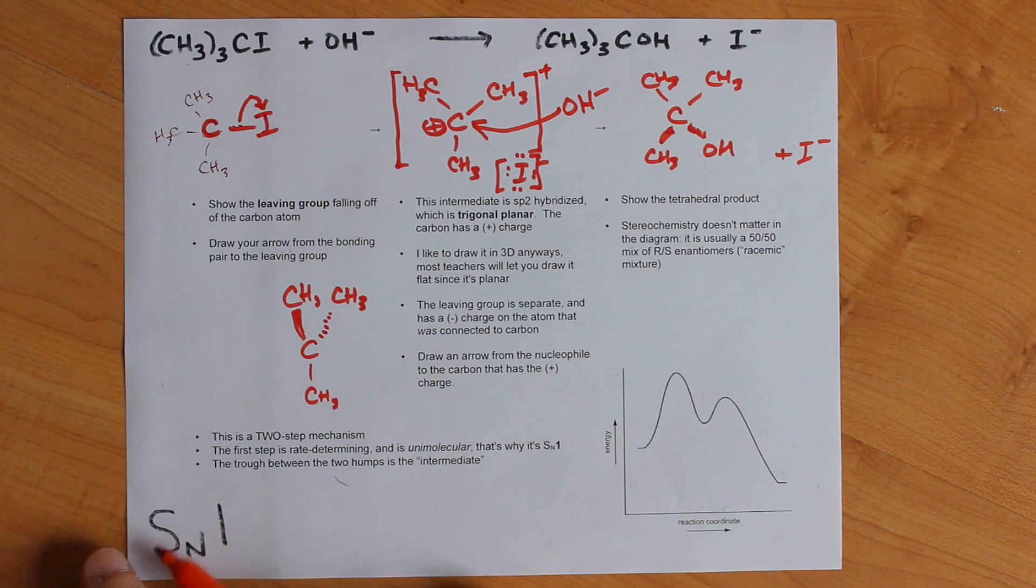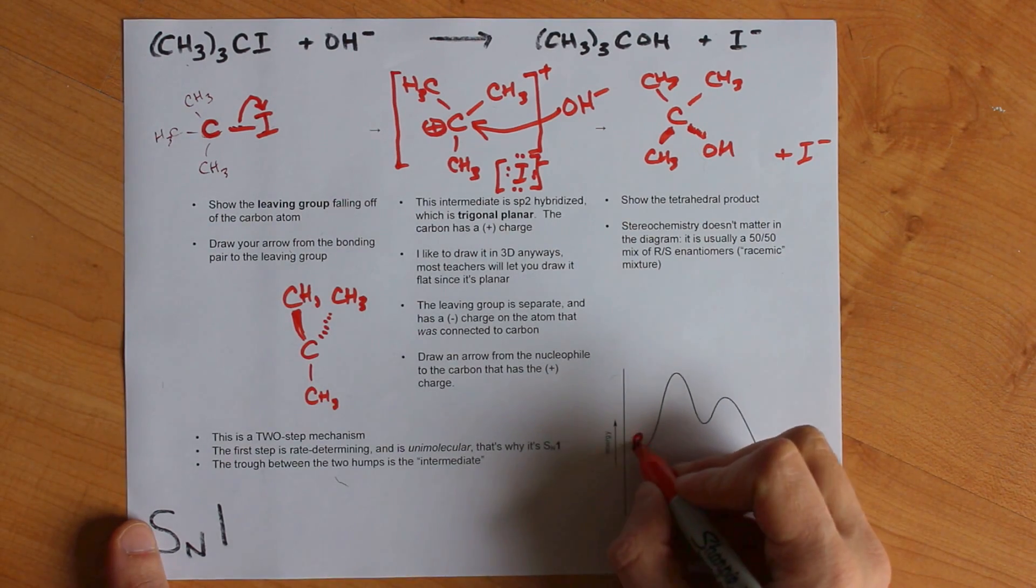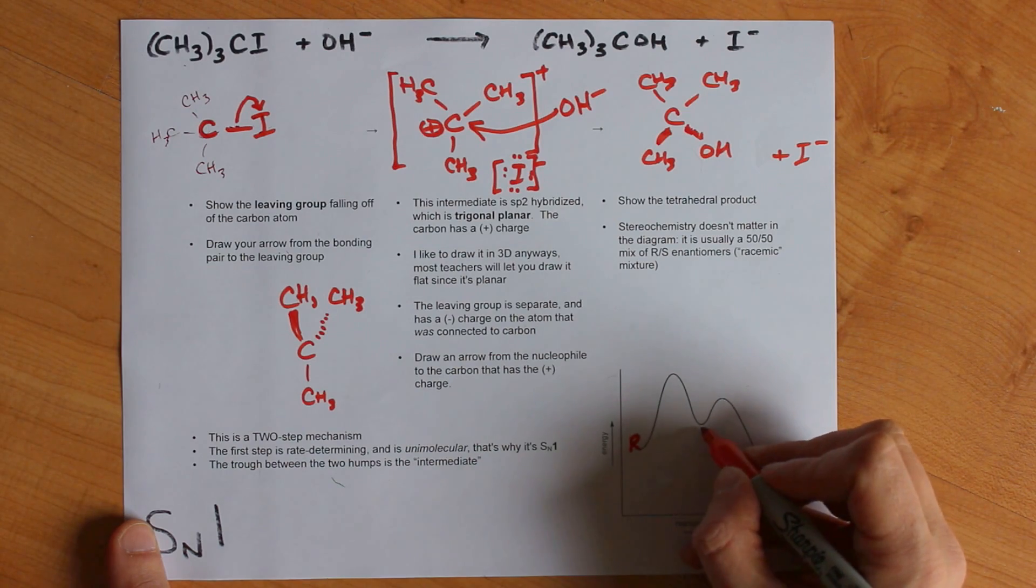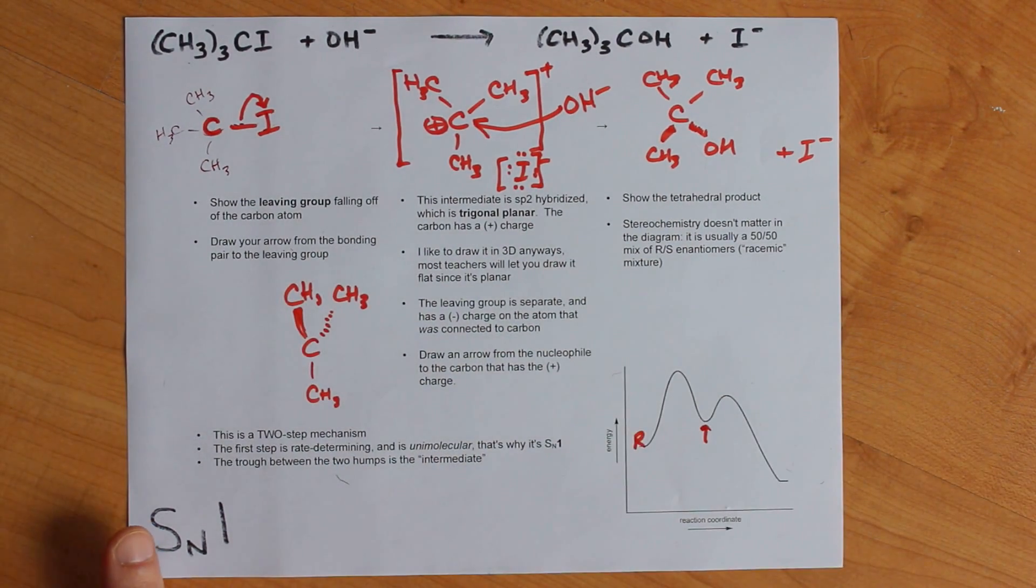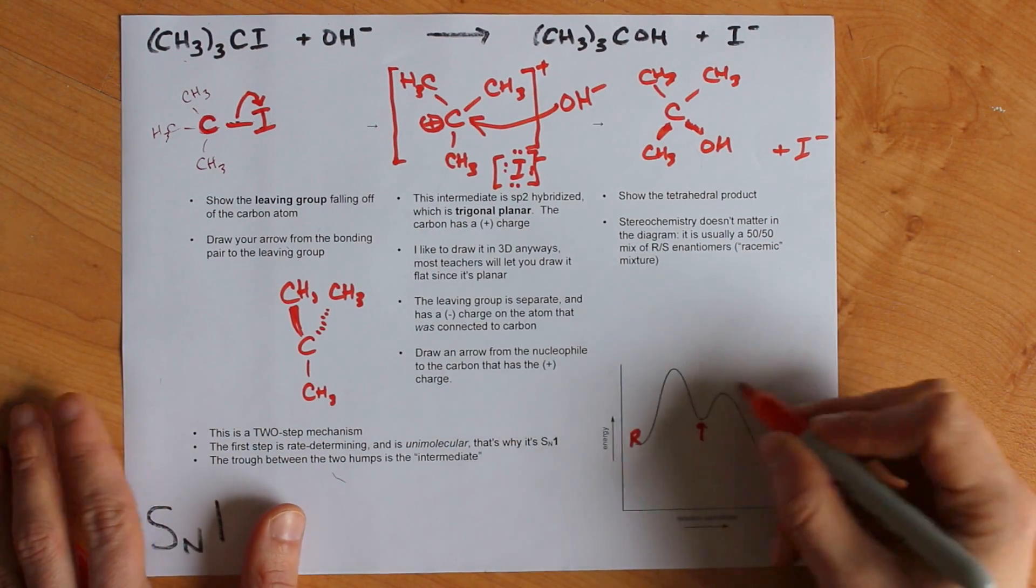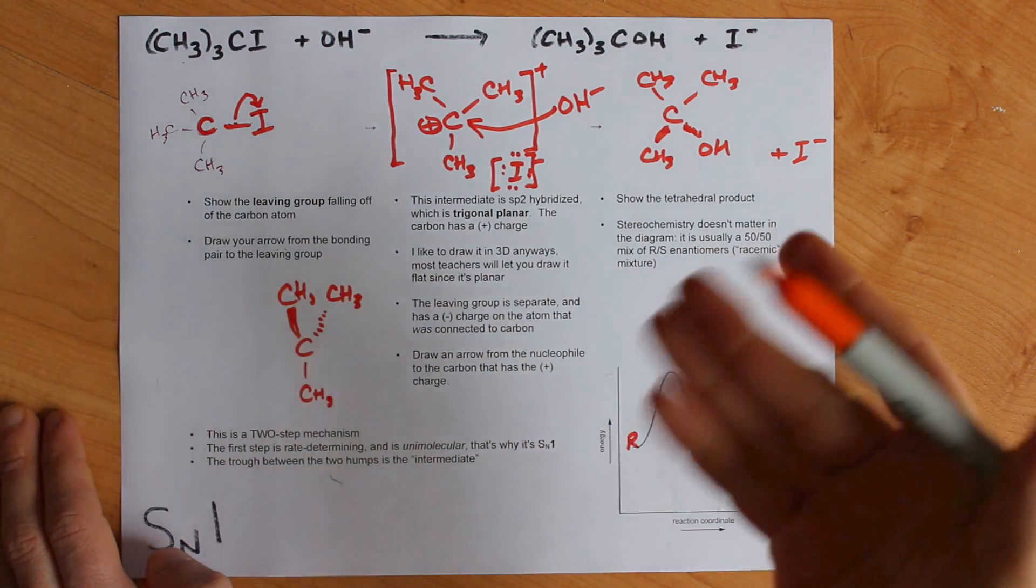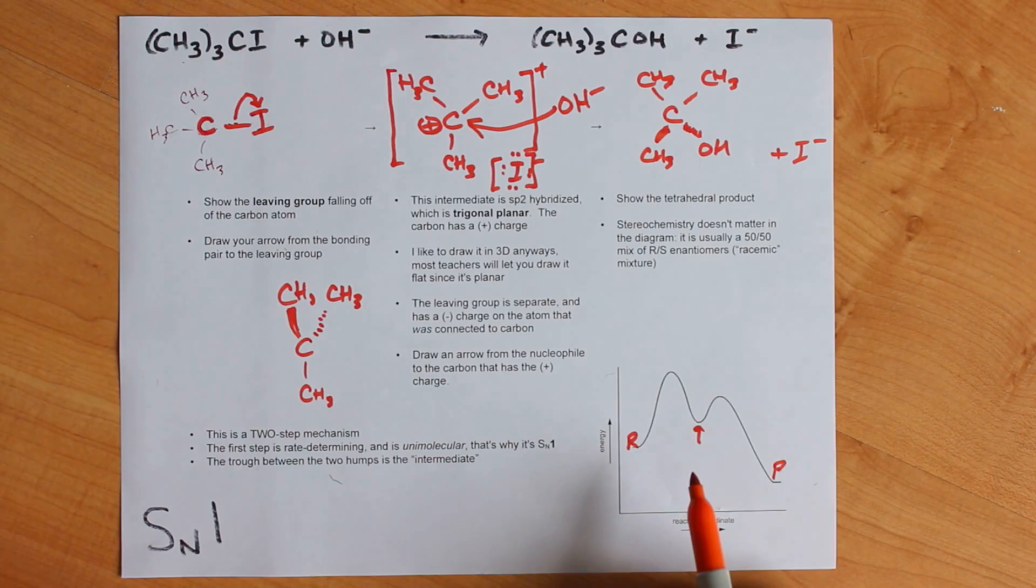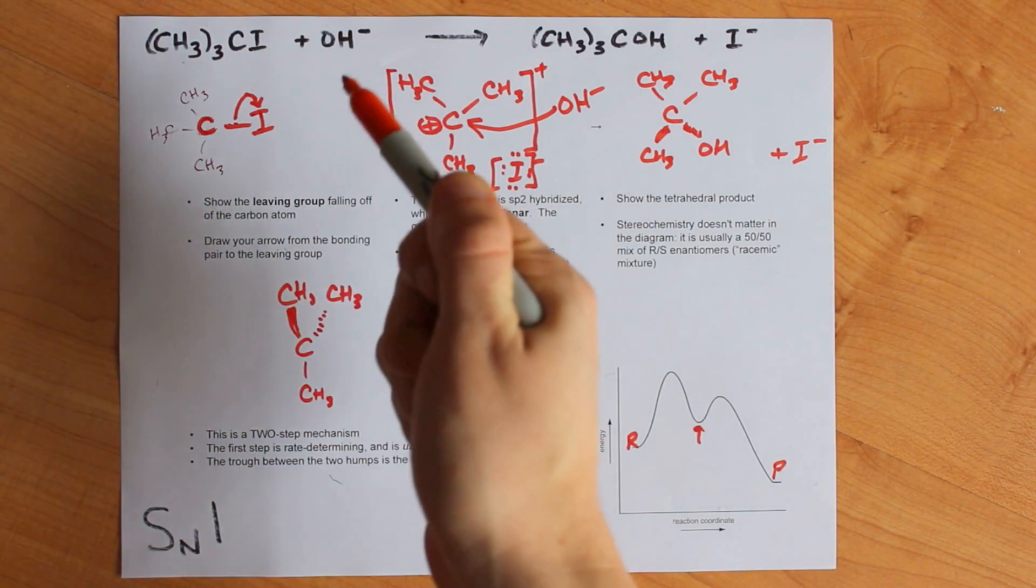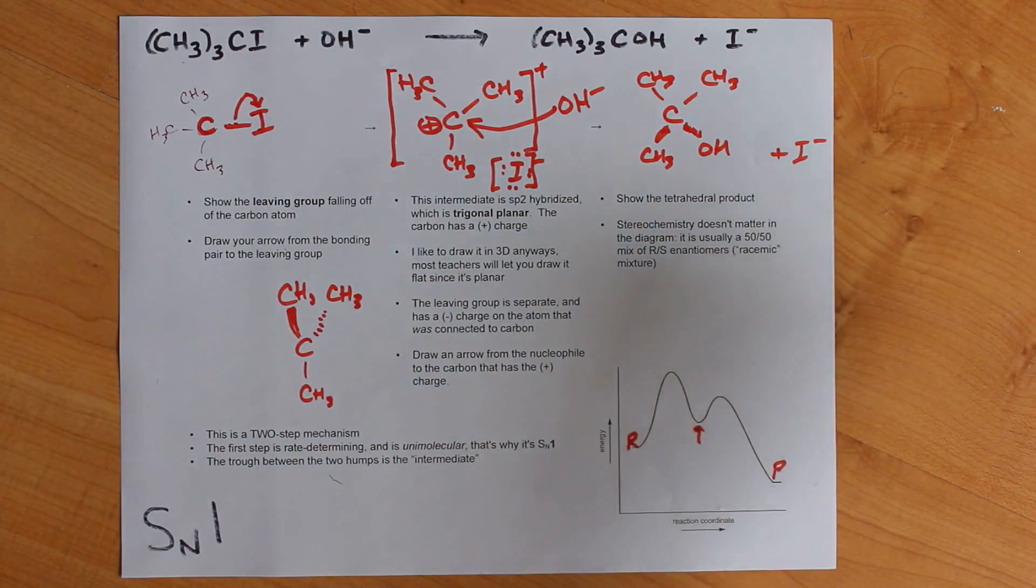Now, let me show you why we call this an SN1 reaction. This is the potential energy diagram. You have your reactants here. The iodine falls off and you end up with your carbocation intermediate here. Then the OH comes in and attaches itself, and you end up with products usually lower in energy than the reactants. It's usually a slightly exothermic reaction, although I can imagine there are some leaving groups and nucleophiles that would cause it to be a different way. I just always draw it this way. We have two transition states.